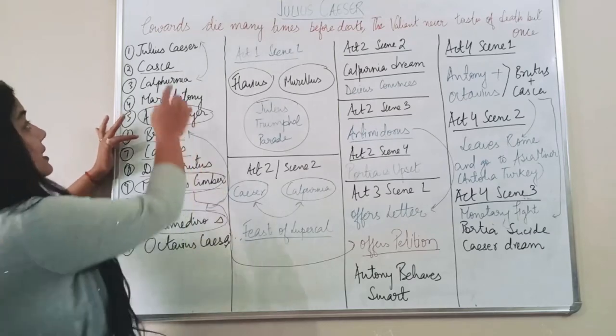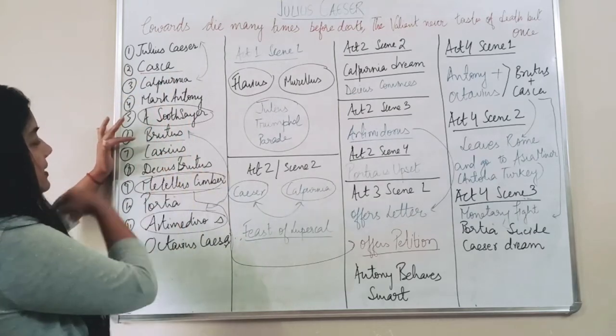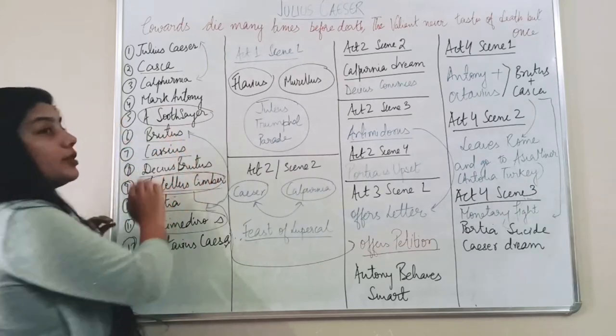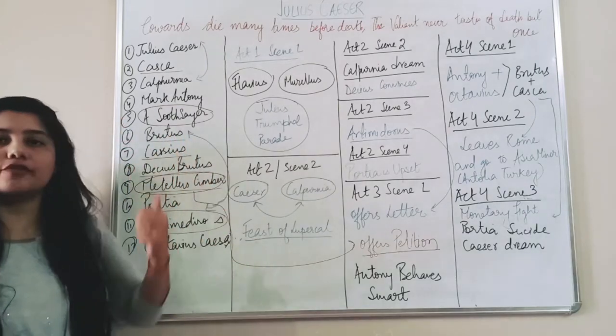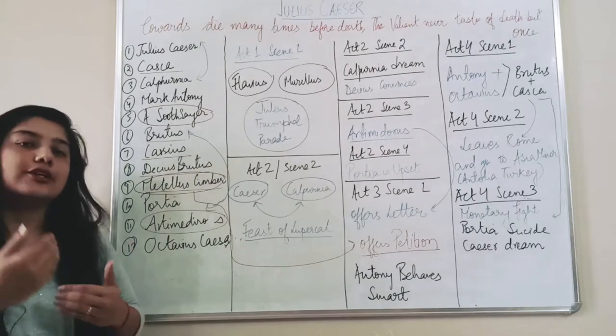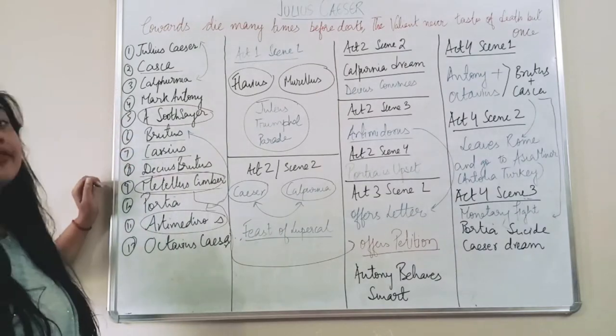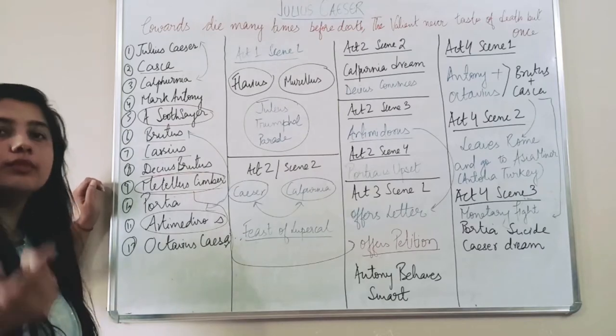He was a good friend of Caesar, he was not in opposition, but because these people Casca, Decius Brutus, Metellus Cimber, Cassius, they all instigated Brutus about something that 'you see this is your friend, he is doing this and that,' so gradually he started hating Caesar. But initially he was his good friend. We cannot say he was a follower but he was a good friend.